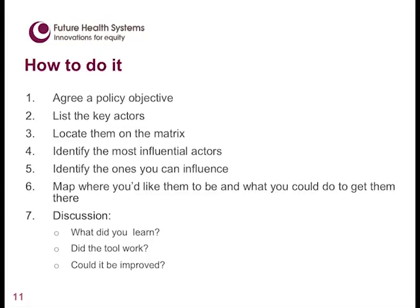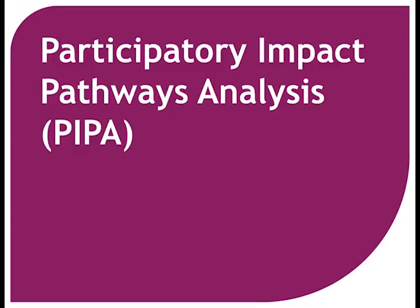It's a quite straightforward process. I've done it in groups, on the back of a napkin, and in the middle of negotiations to see how people have changed throughout the day. The steps are: agree on a policy objective, locate key actors on the matrix, identify the most influential, think about which ones you can actually influence, and map where you'd like them to be and how you might get them there. That's a brief overview of the alignment interest and influence matrix.